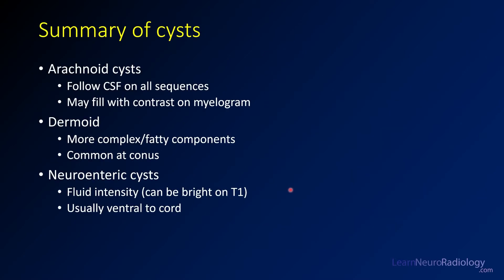In summary, we've seen three cystic lesions that can occur in the spinal cord. Arachnoid cysts follow CSF on all sequences and may or may not fill with contrast on myelograms, but myelograms can help delineate their margins. Dermoids are complex embryonal lesions with complex components, often containing fat, most commonly located at the conus. Neuroenteric cysts are usually fluid-intensity, can have some intrinsic T1 hyperintensity, and are located ventral to the cord. If you see lesions with cystic components and minimal enhancement, think about each of these three.